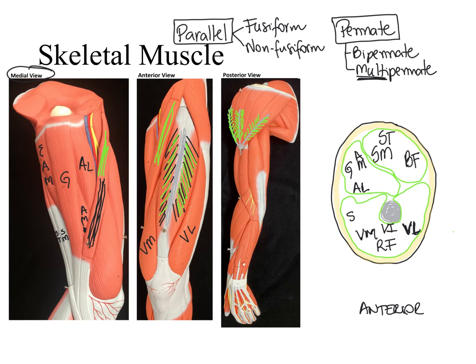We also see in our body a central tendon with fascicles connecting on only one side of the central tendon. We classify this type of skeletal muscle as unipennate — uni making reference to the unique side of the central tendon that has fascicles connecting. An example of a unipennate muscle is the flexor pollicis longus, the muscle that allows us to flex our thumb. It has the word pollicis in its name because that references the pollex, which is the anatomical name for thumb.